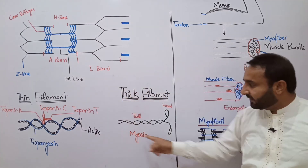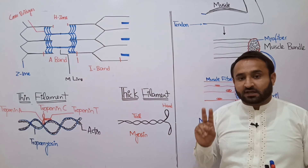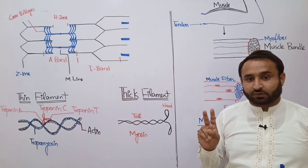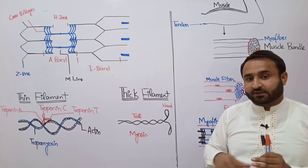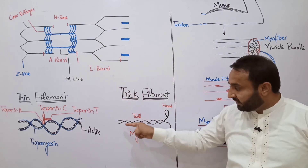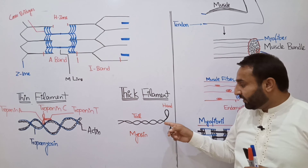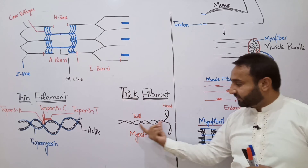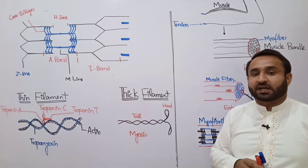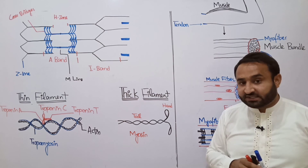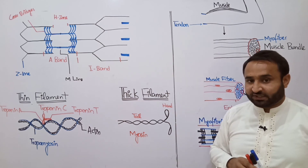The thick filament is the myosin filament. Myosin is a dipeptide — it has two polypeptide chains. The heads of myosin are sometimes called cross bridges because they attach to actin during contraction.